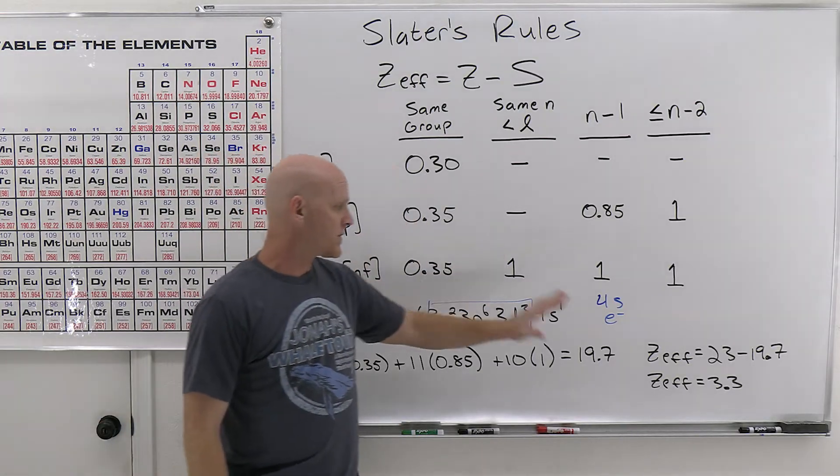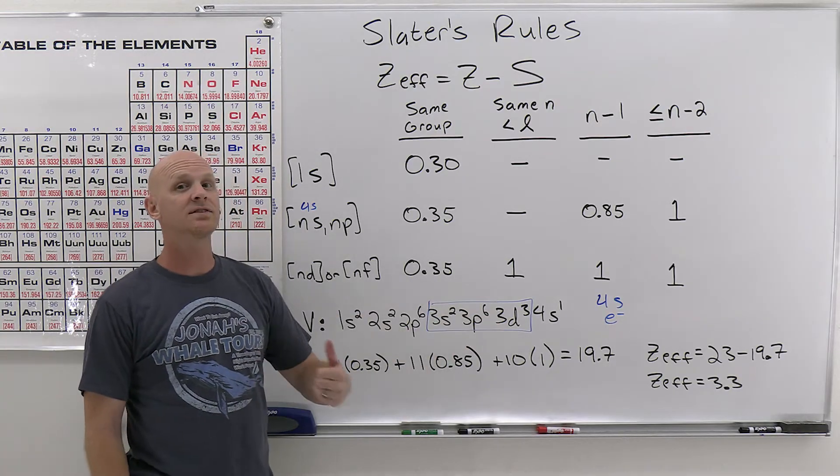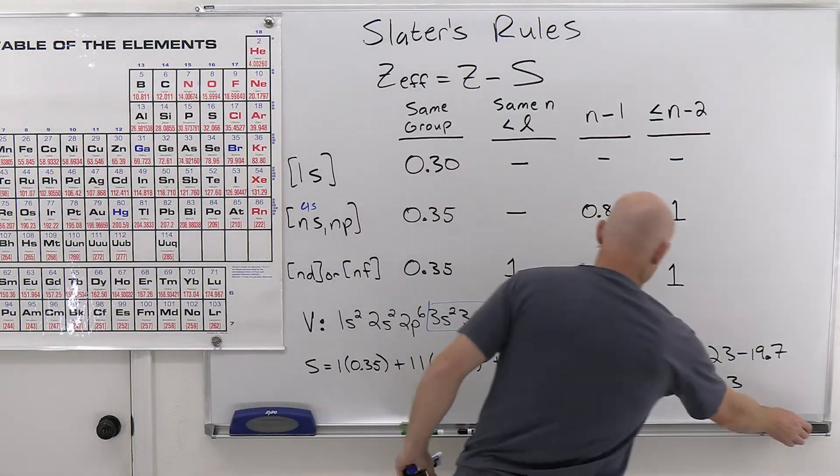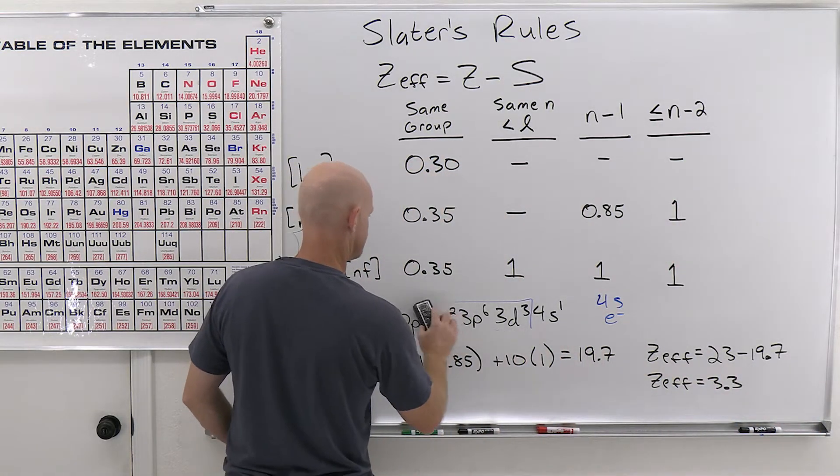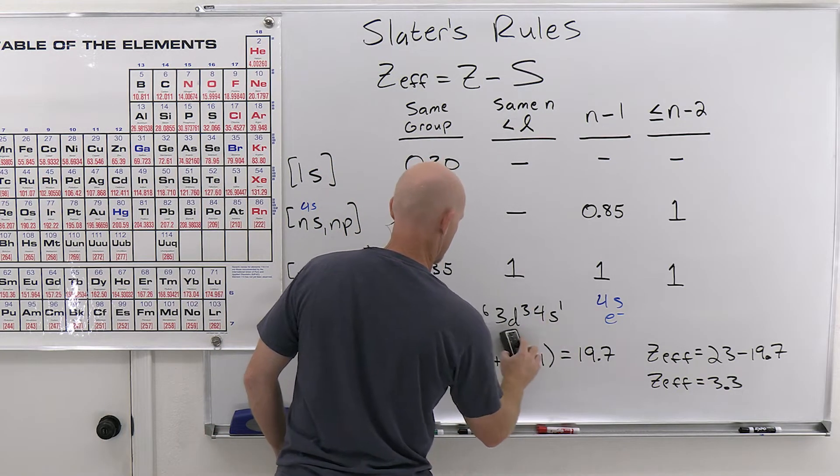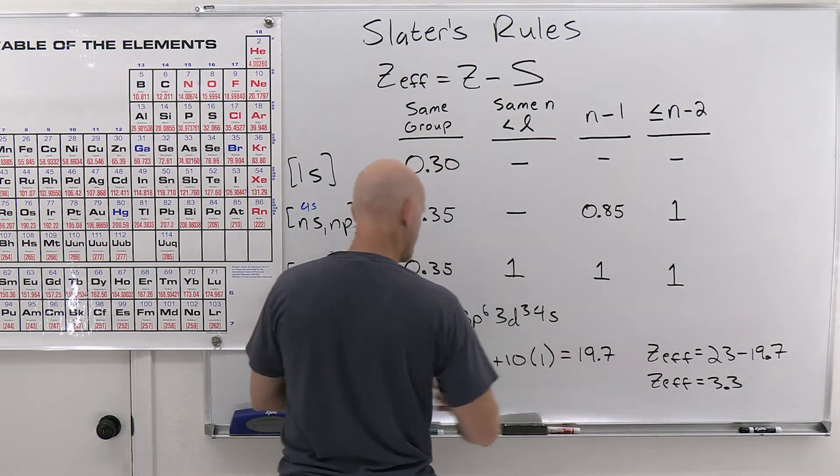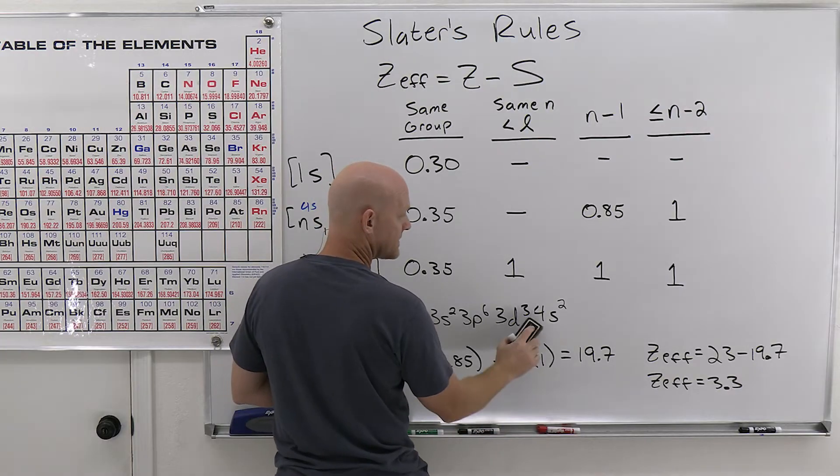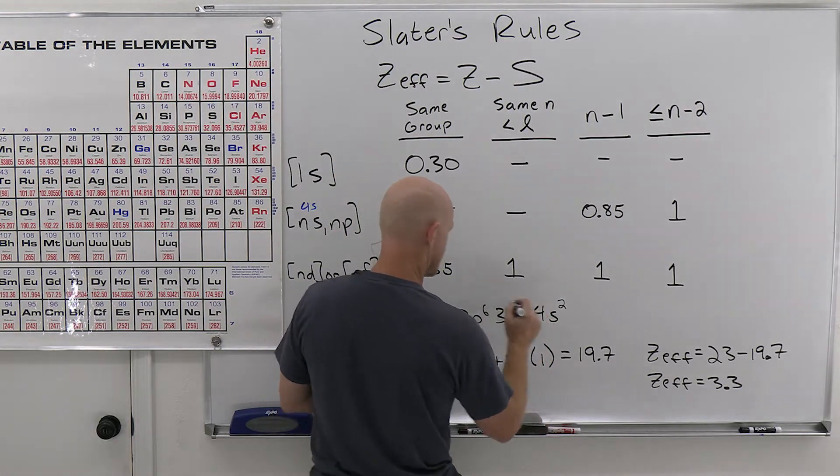However, what I do want to compare this number to is what if we had pulled out a 3d electron instead of the 4s electron. And so let's go back to this. So I'm going to take this 4s electron and put it back into the electron configuration. So 4s2. And instead I'm going to pull out one of these 3ds. So there's only two left there.